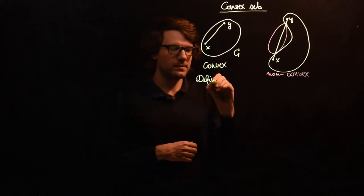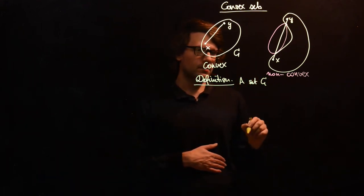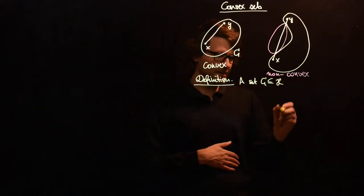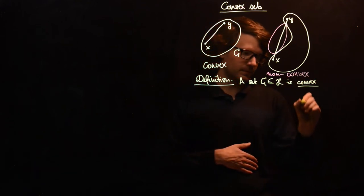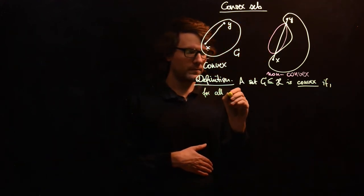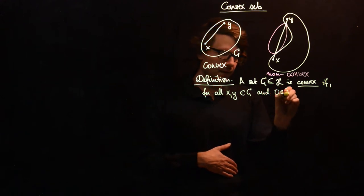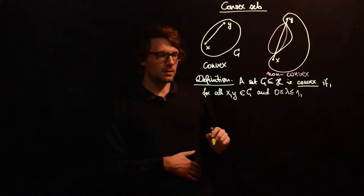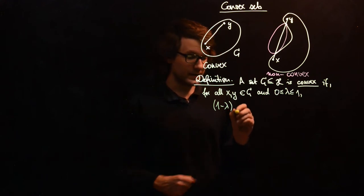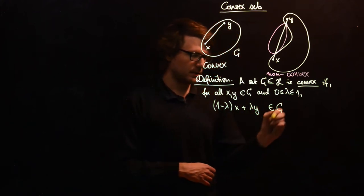Definition: a set C, a subset of our usual finite-dimensional inner product space, is convex if for all x and y in C and lambda between 0 and 1, the point (1 minus lambda)x plus lambda·y is also an element of C.